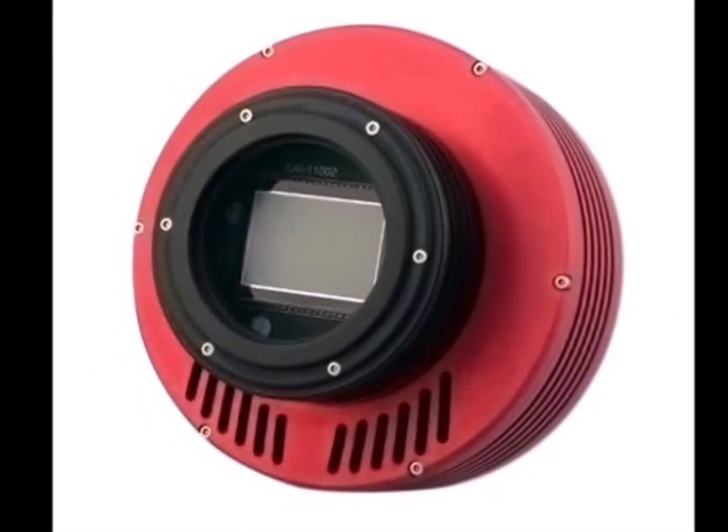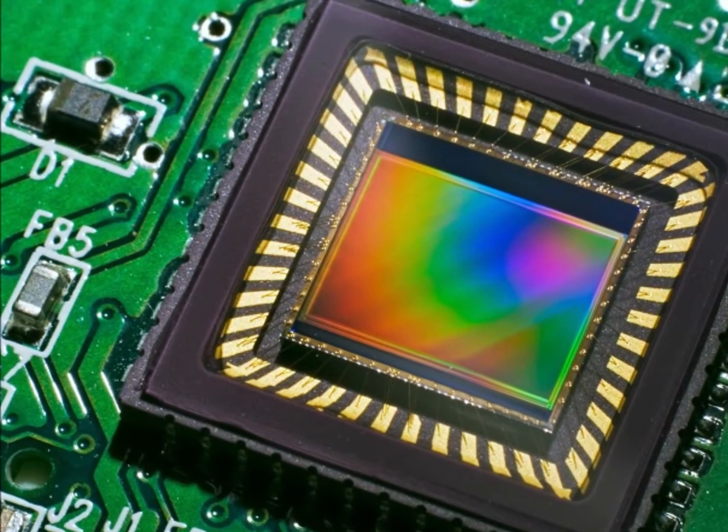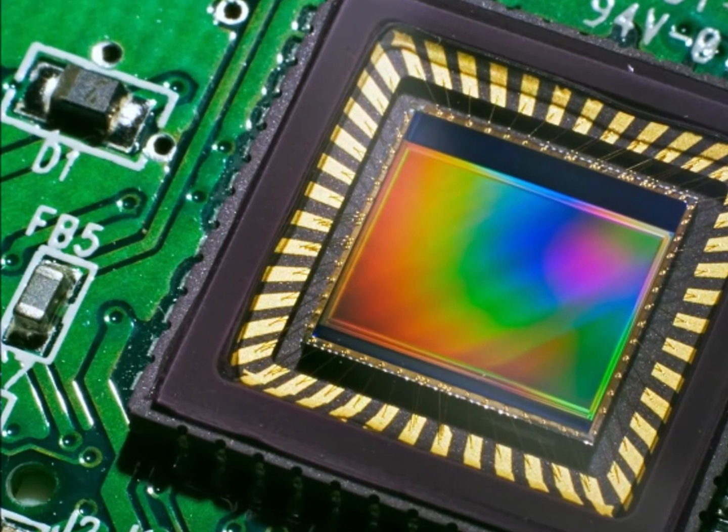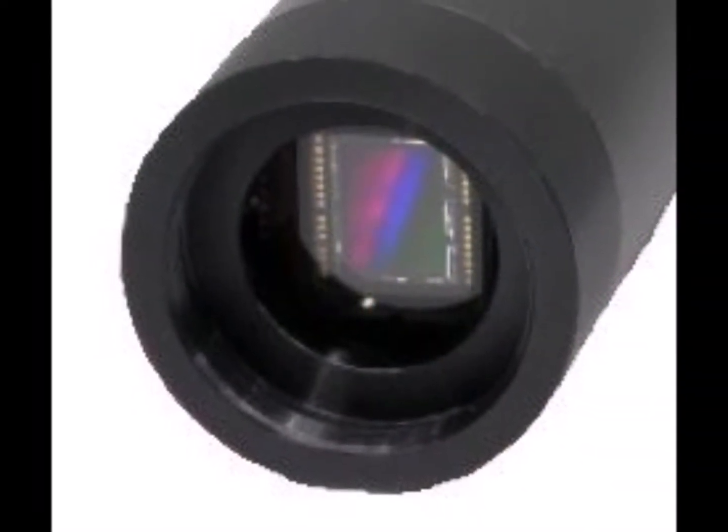CCDs and CMOS sensors depend on every cell to collect light and create the digital images we see. Images will lose quality if cells are blocked by contaminants or damaged by improper cleaning techniques.